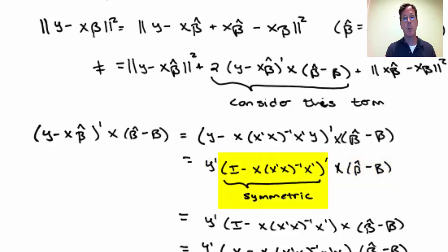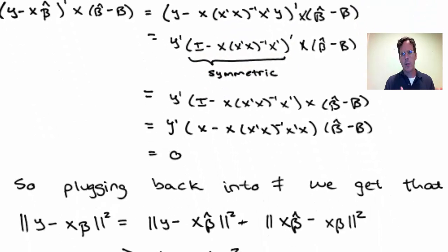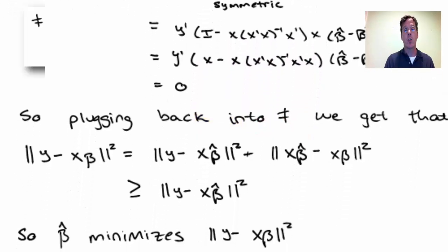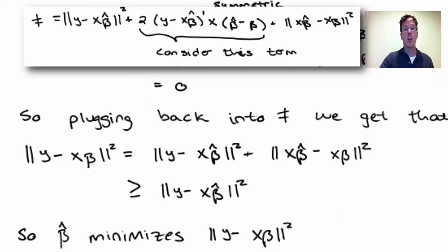This term, i minus x x transpose x inverse x transpose is symmetric, and it's also idempotent. Let's consider this term. We can multiply through by x and we get x times the identity matrix which yields x, and then we have minus x x transpose x inverse x transpose x. But x transpose x inverse times x transpose x is i, so we get x minus x. That's zero. So this term in the equation is exactly zero.